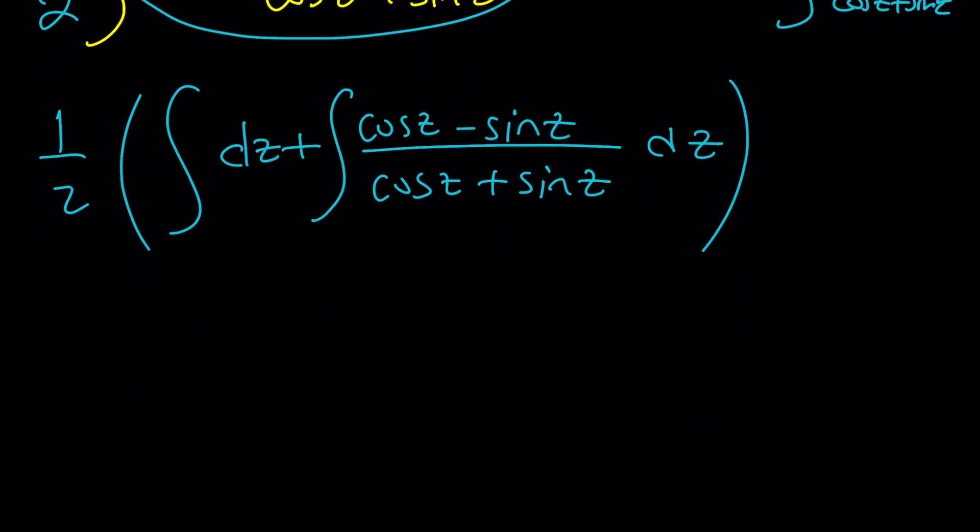We can just integrate these two things now. The integral of dz is just z. And this one is actually u substitution, because if you call this u, this is going to be du. Remember? The derivative of cosine is negative sine. The derivative of sine is cosine. So we have the derivative of the denominator in the numerator. Make sense? So it's kind of like this u prime over u. But u prime we write as something dz. Anyways, hopefully you get the idea.